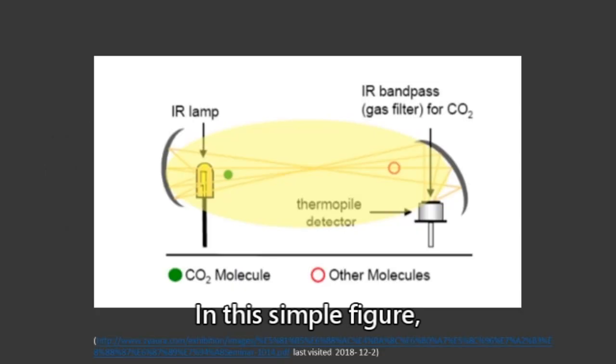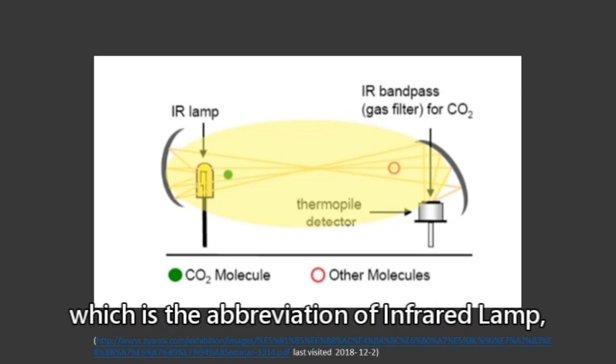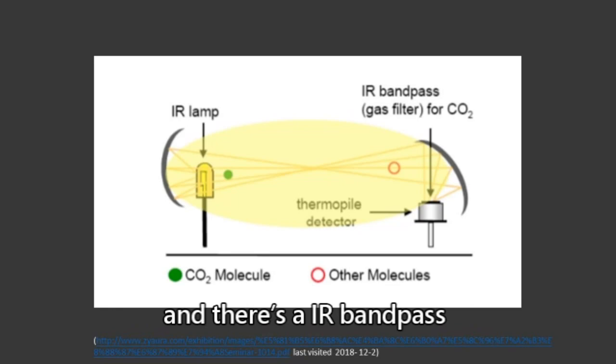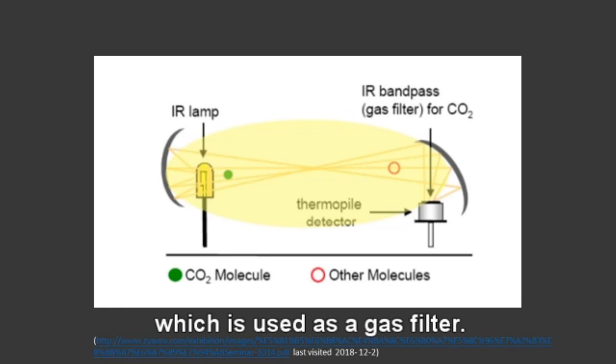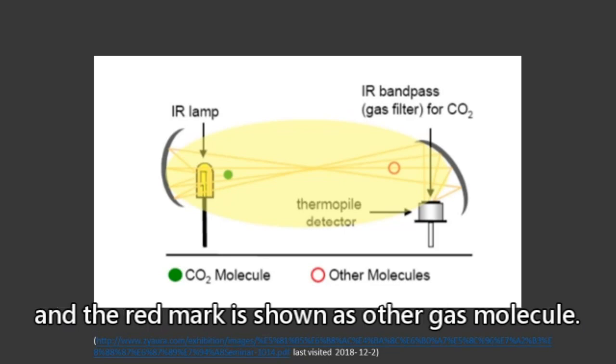In this simple figure, we can see that there is an IR lamp, which is the abbreviation of infrared lamp. And there is an IR bandpass, which is used as a gas filter. The green mark is shown as CO2 molecule, and the red mark is shown as other gas molecule.